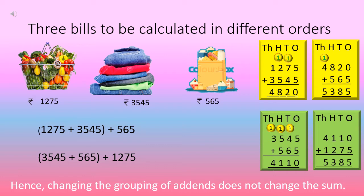So Ambika decided to add Rs. 3,545 and Rs. 565 first. When she added them, she got Rs. 4,110. Then she added Rs. 1,275 to Rs. 4,110 and also got Rs. 5,385 as the sum. This means Ambika's calculation also confirmed that they had spent a total of Rs. 5,385. Both Arpit and Ambika added the bills in different orders but got the same answer.